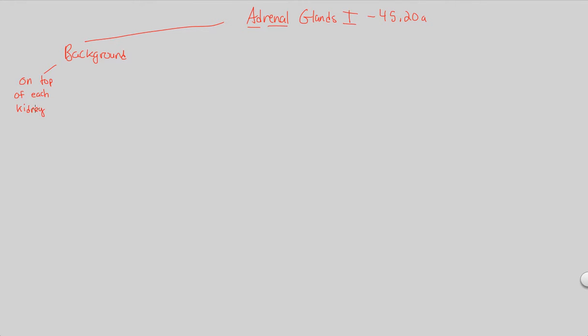Background: Adrenal glands are on top of each kidney, and that's the name adrenal. Kidney is the renal system, part of the renal system, and the adrenal glands are on top of each of those kidneys. Their job is to respond to stress.